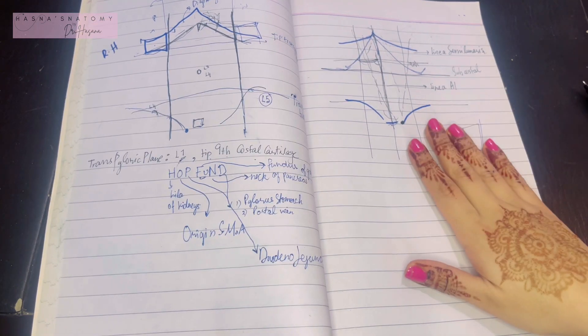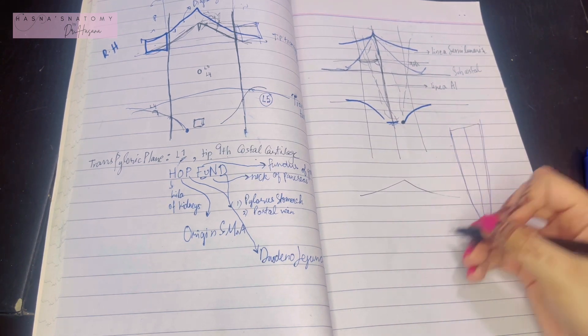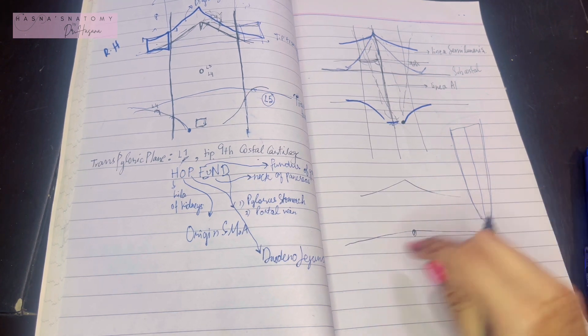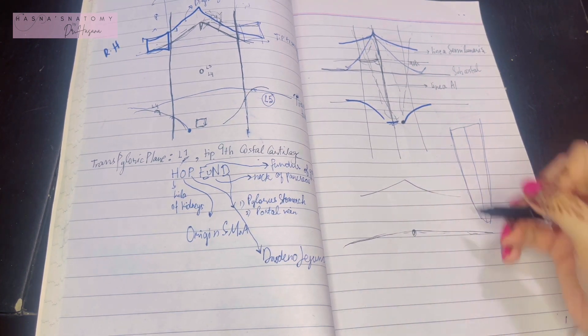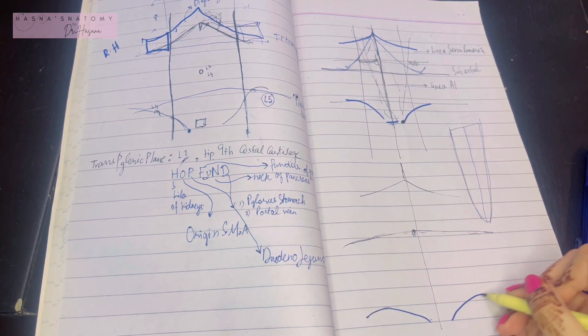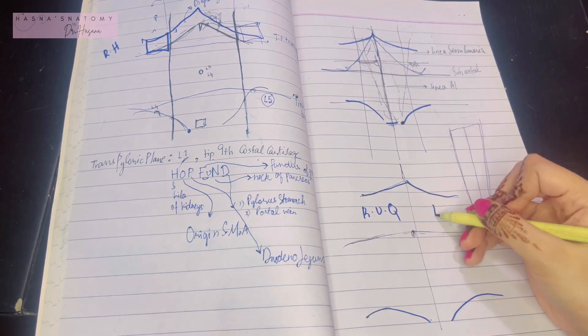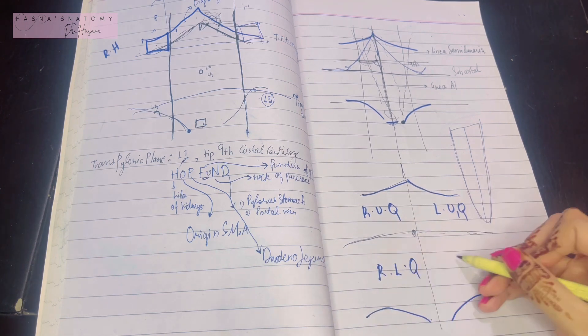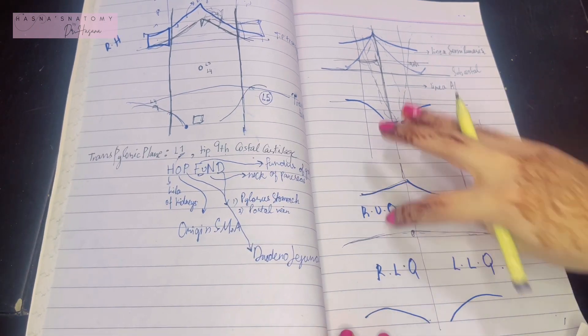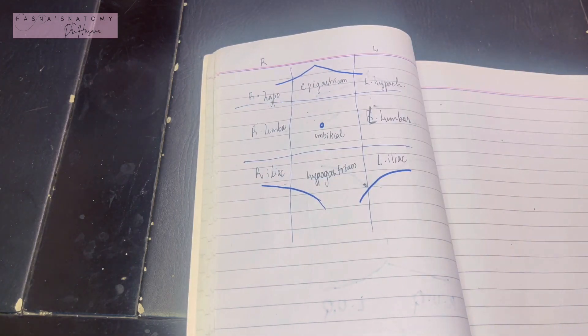Not only is the abdomen divided into nine regions, but it's also divided into four quadrants. This is done via the first plane, known as the trans-umbilical plane, which is a transverse line passing through the umbilical region, and another plane, which is the median plane, basically dividing your abdomen into four quadrants. The four quadrants are: the right upper quadrant, left upper quadrant, right lower quadrant, left lower quadrant. Overall, you can see there are four quadrants and nine regions of the abdomen; however, these nine regions are more specific in relation to the abdomen.